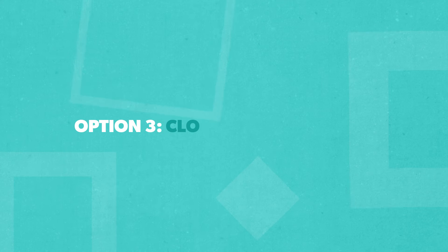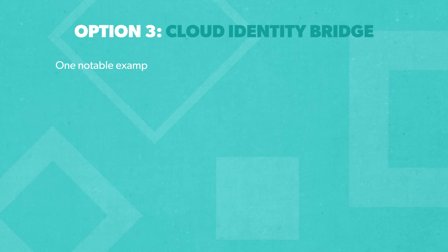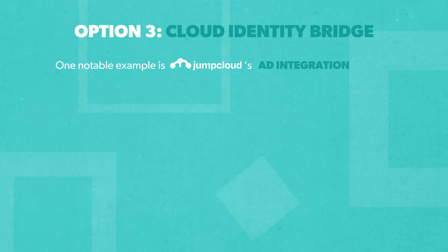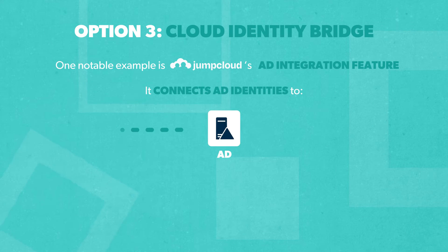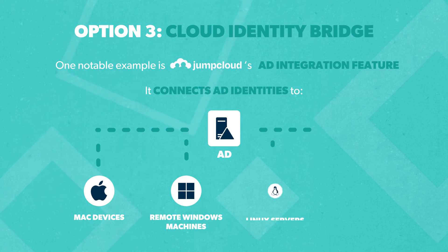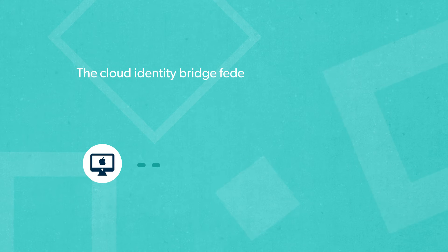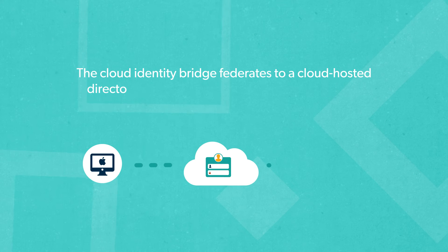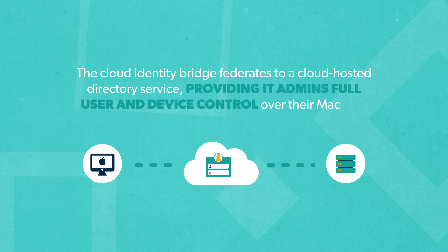Option 3 introduces the Cloud Identity Bridge. One notable example is JumpCloud's AD integration feature. This lightweight approach connects AD identities to various resources including Mac devices, remote Windows machines, Linux servers, and more. The Cloud Identity Bridge federates to a cloud-hosted directory service, providing IT admins full user and device control over their Mac fleet.